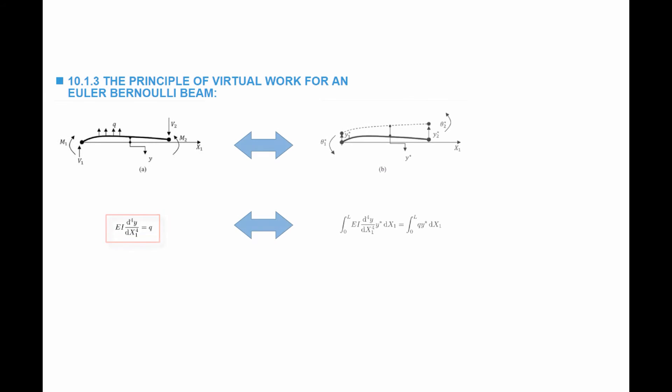Similarly, we're going to look at the principle of virtual work applied to an Euler-Bernoulli beam. Under equilibrium, the equation of equilibrium states that EI multiplied by d⁴y/dx₁⁴ is equal to q. We can assume that the equilibrium position y is perturbed by a virtual displacement field y star that is differentiable and smooth. Then the integral of EI d⁴y/dx₁⁴ multiplied by y star is equal to the integral of q times y star.